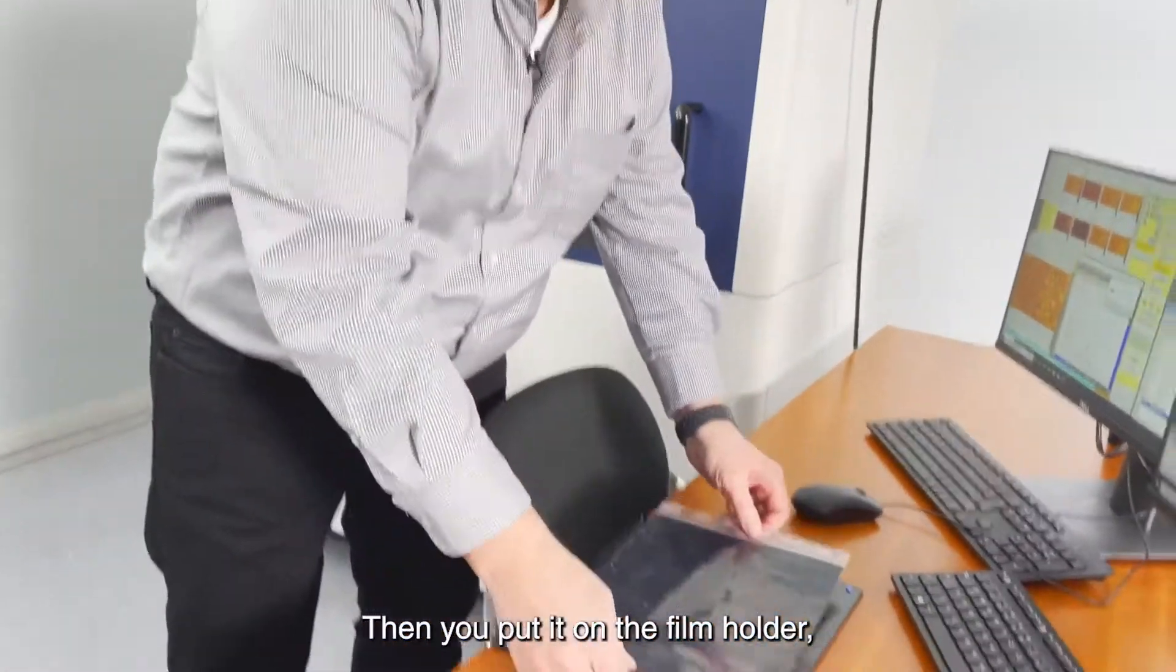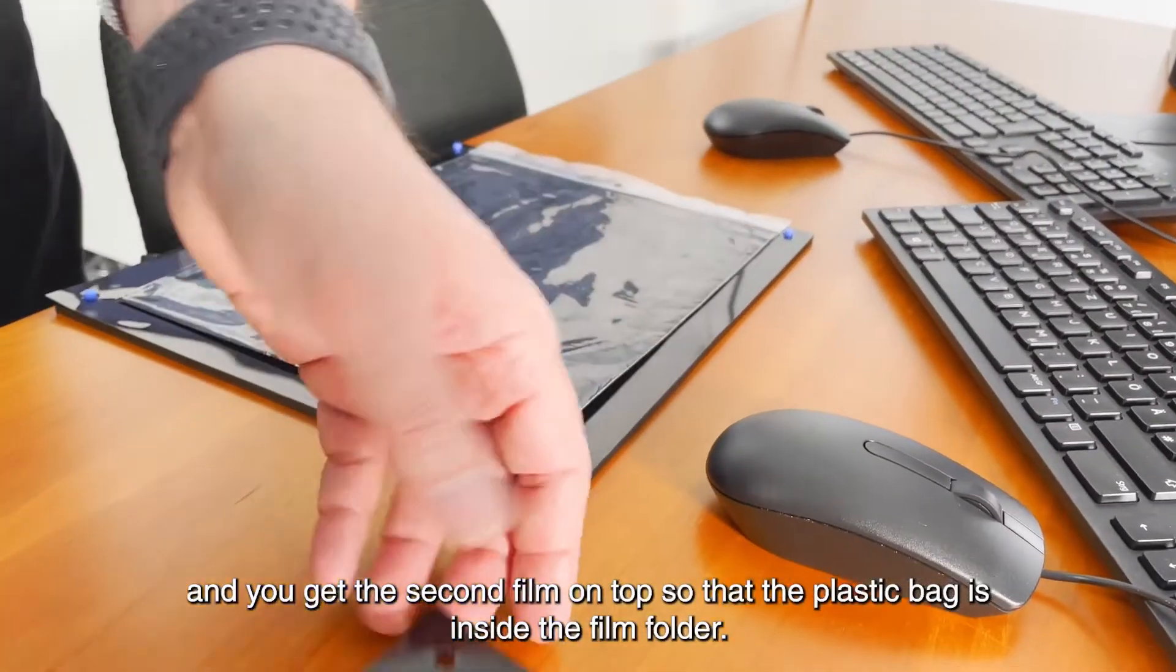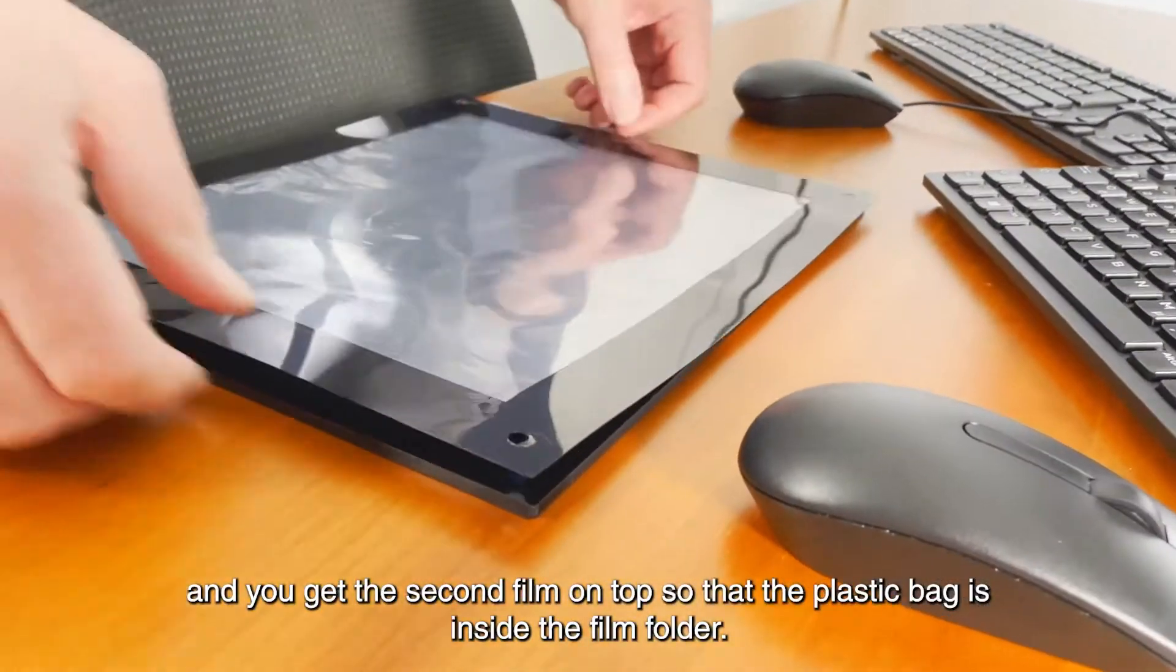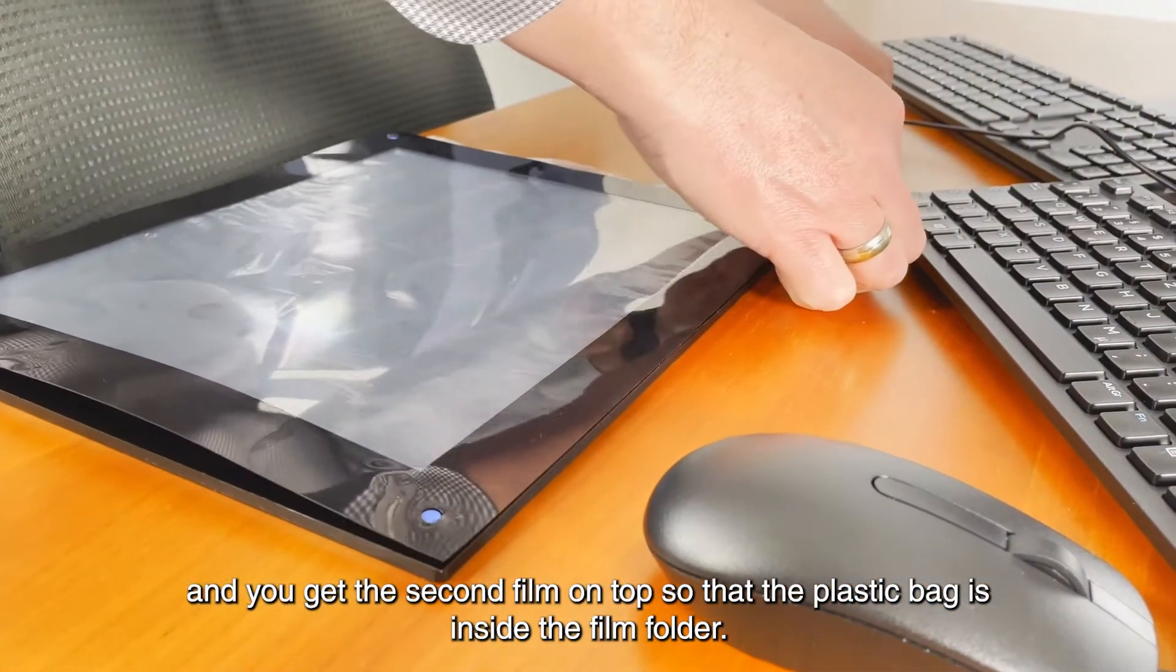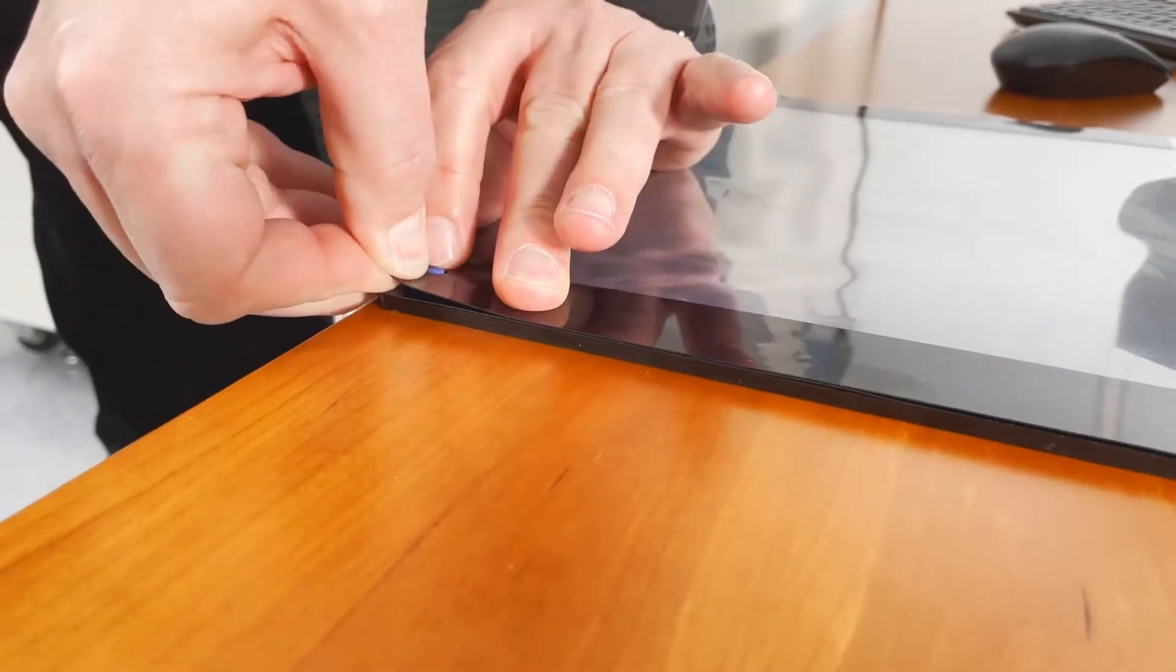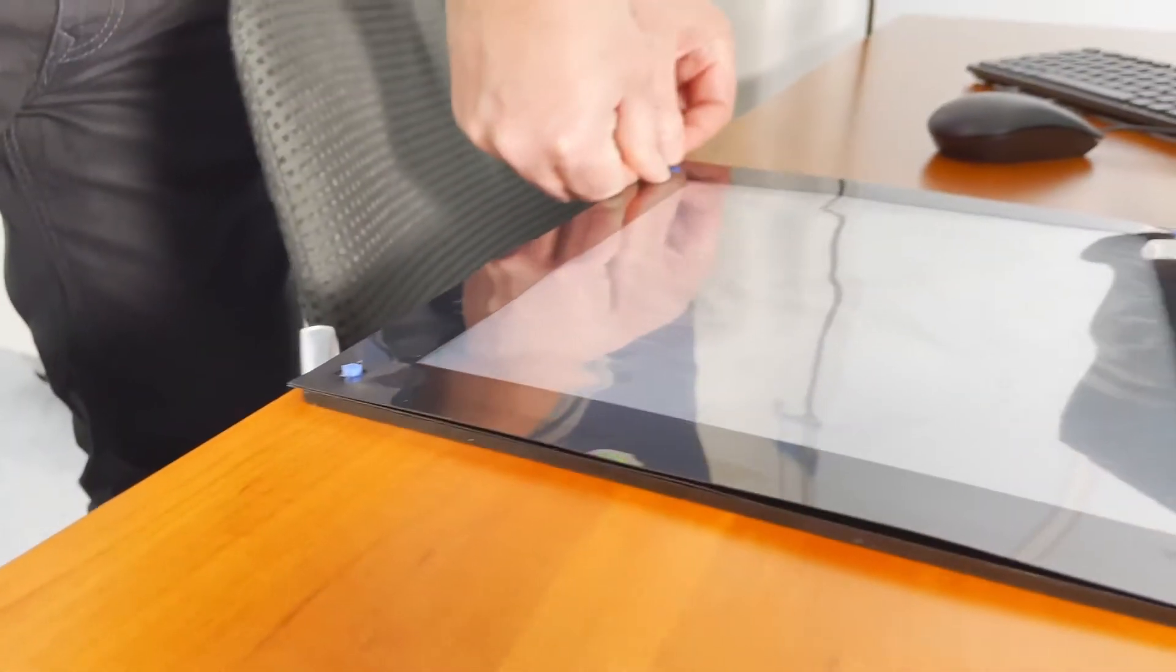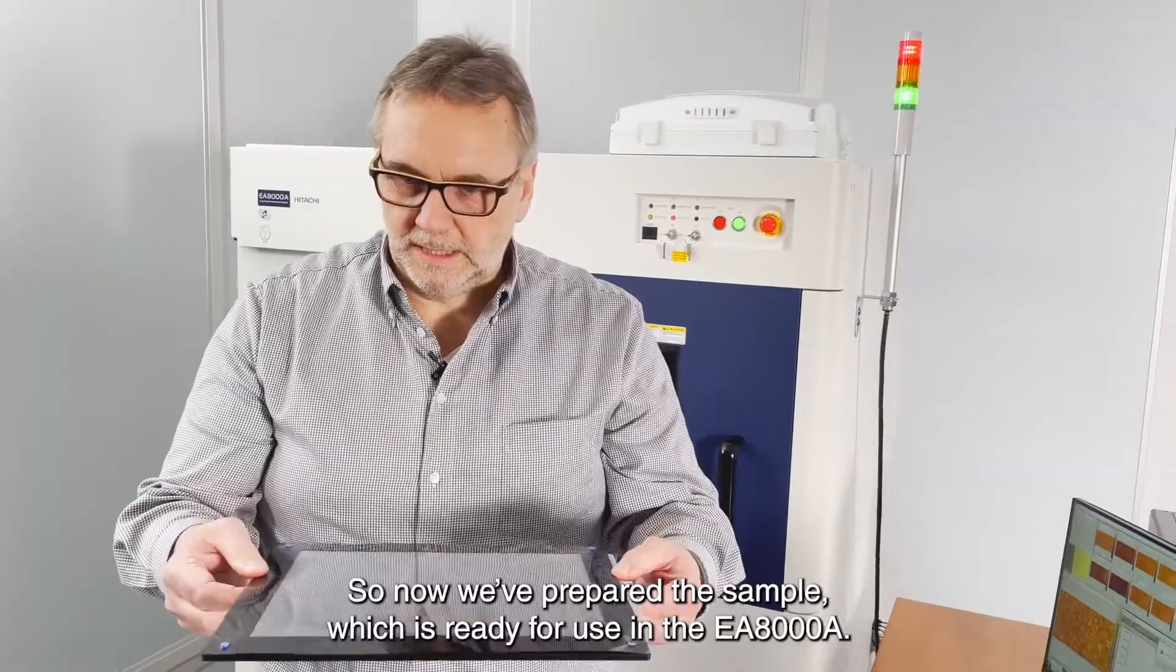Then you put it on the film holder and you give a second film on top so that the plastic bag is inside the film holder. So now we prepare the sample which is ready for use in the EA8000A.